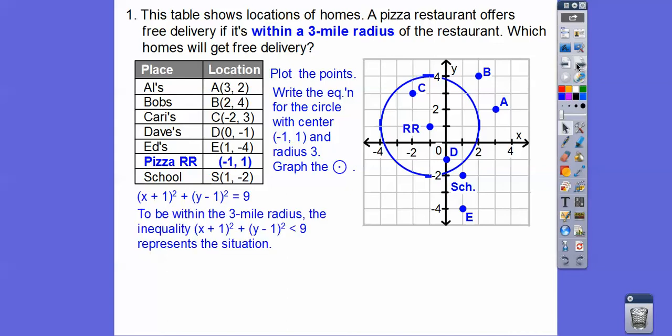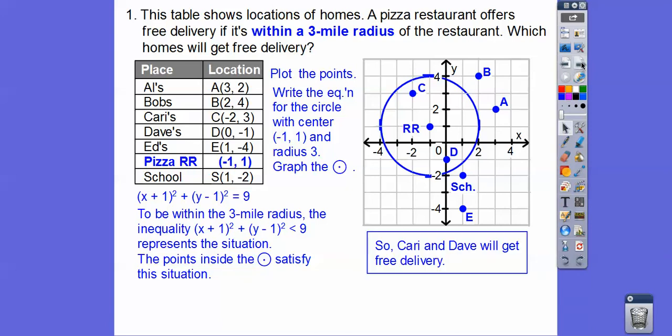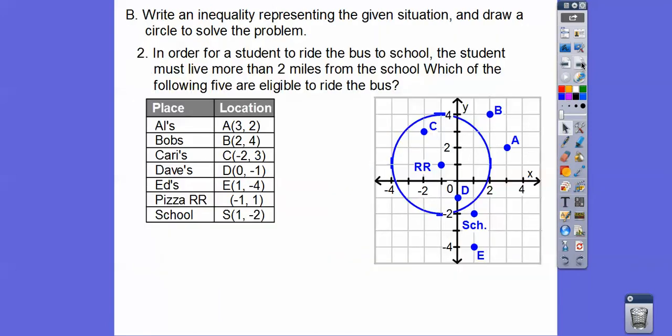To be within the three-mile radius, the inequality that they want us to write is less than 9. Less than the radius squared. So, all the points that are inside that circle are the ones that are going to get the free delivery. So, it looks like Carrie's inside and then Dave's inside. So, Dave and Carrie are going to get the free delivery. The other ones have to pay for an extra delivery. So, Carrie and Dave gets the free delivery.